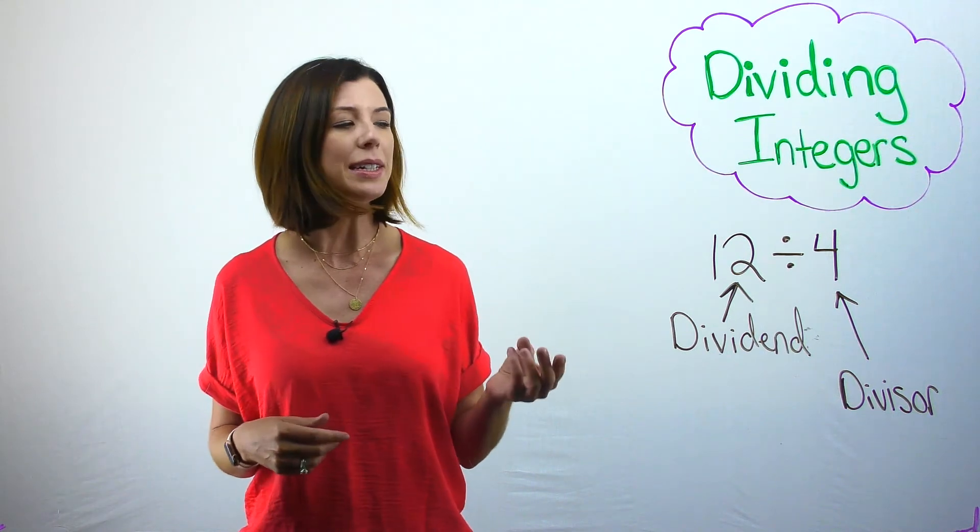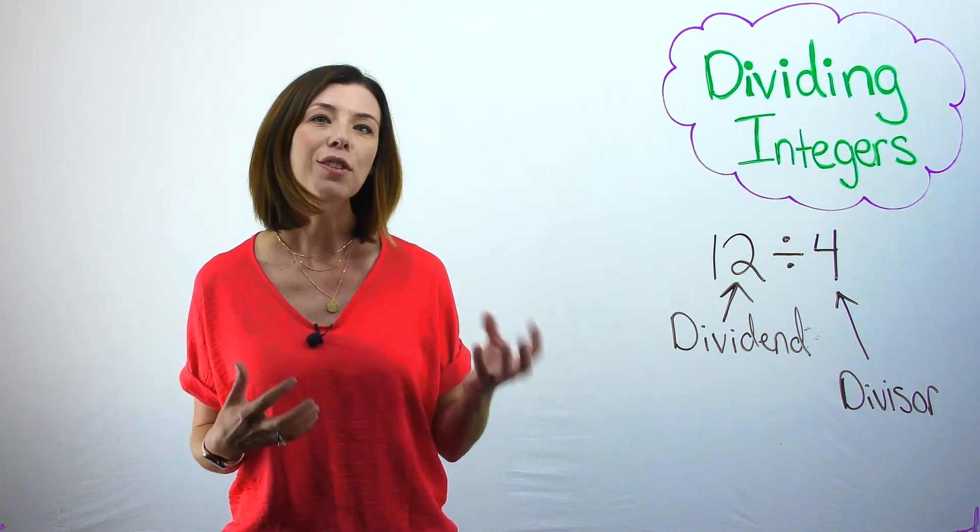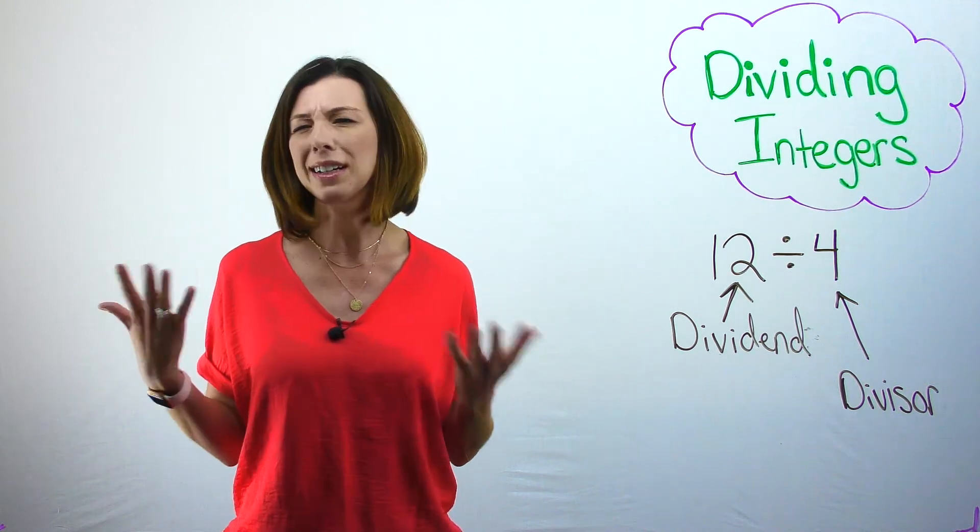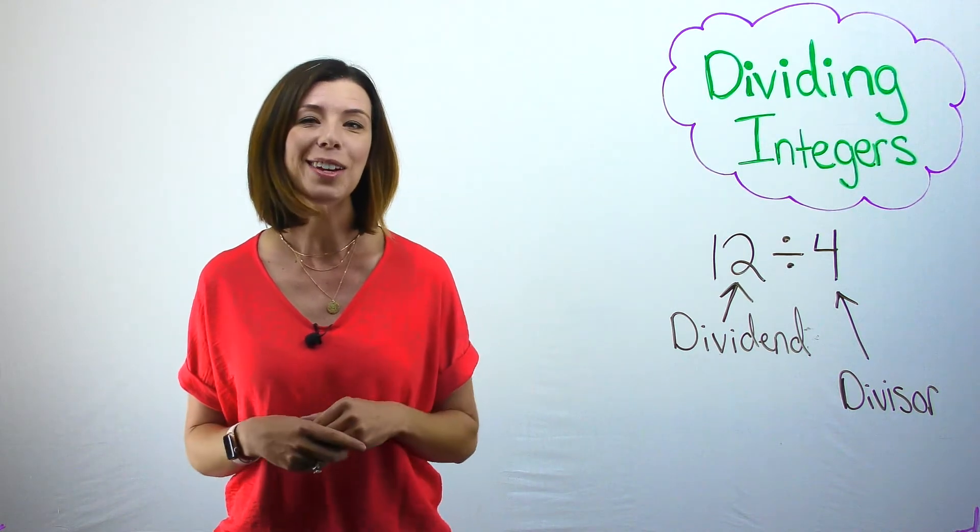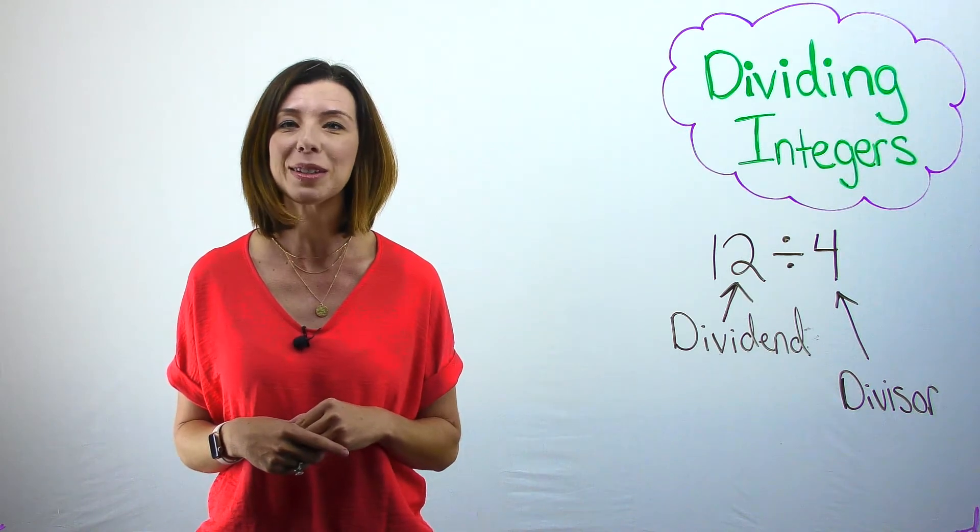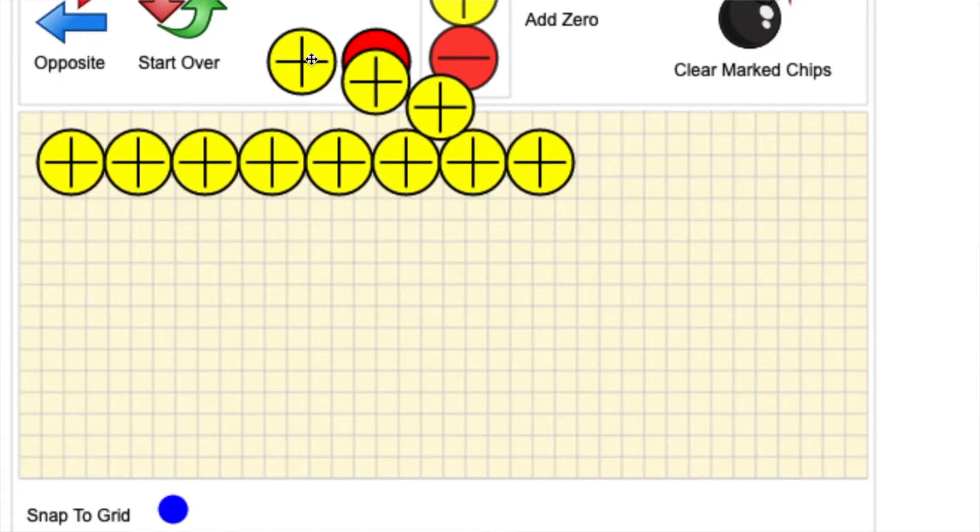So in other words, I need to make groups that have 4 positives in each one, and I need to figure out how many groups do I need. Let's take a look at the integer chips for some help modeling this problem.